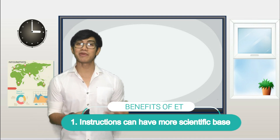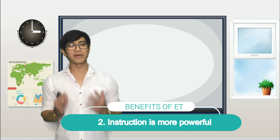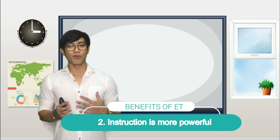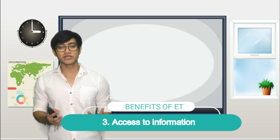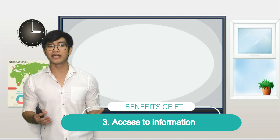These are some of the benefits of educational technology. Technology can make education more effective because instructions can have a more scientific base. It also makes instructions more powerful, because with the use of available resources and technologies, instructions become very powerful. Lastly, technology provides immediate and equal access to information.